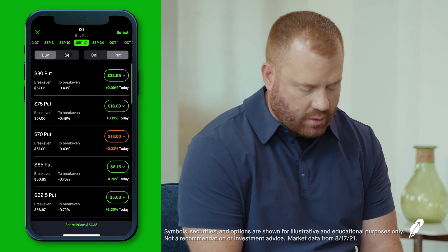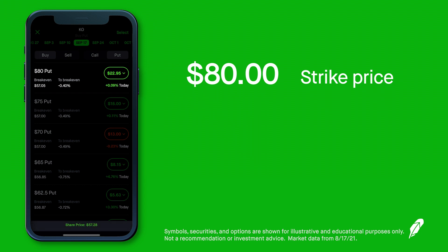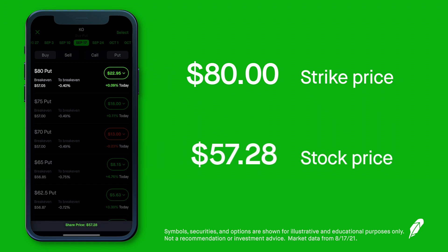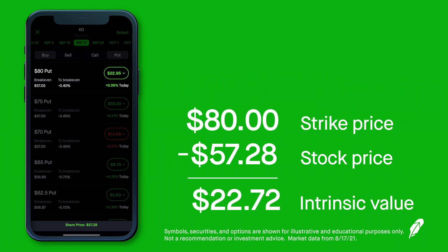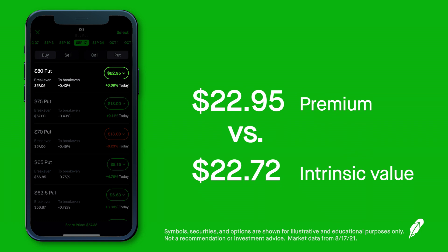If the share price is $57.28 and you look at the $80 put at the top of the chain, you'd have the ability to sell shares for $80 when they're trading at $57 — essentially locking in a $23 value. Of course everyone would want that, but you have to pay for that premium. There's no free lunch. You'd pay $22.95 to have the right to sell shares at $80, which encompasses that intrinsic value — the real value of that option.